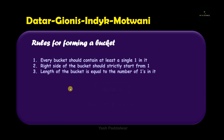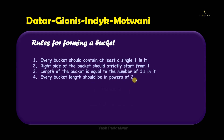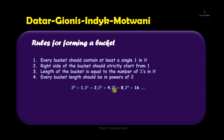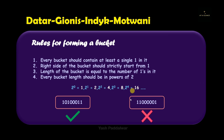The fourth rule says that every bucket length should be a power of two — that means two to the power zero (1), two to the power one (2), two to the power two (4), and so on: 1, 2, 4, 8, 16, 32, etc. In the first example, the length is four, which is two to the power two — valid. In the second example, the length is three, which is not a power of two, so it is not a valid bucket.